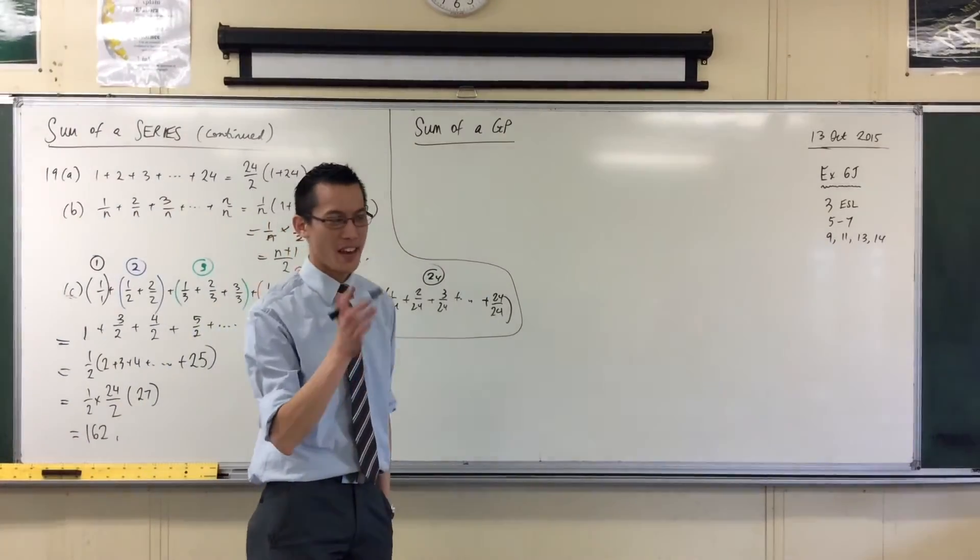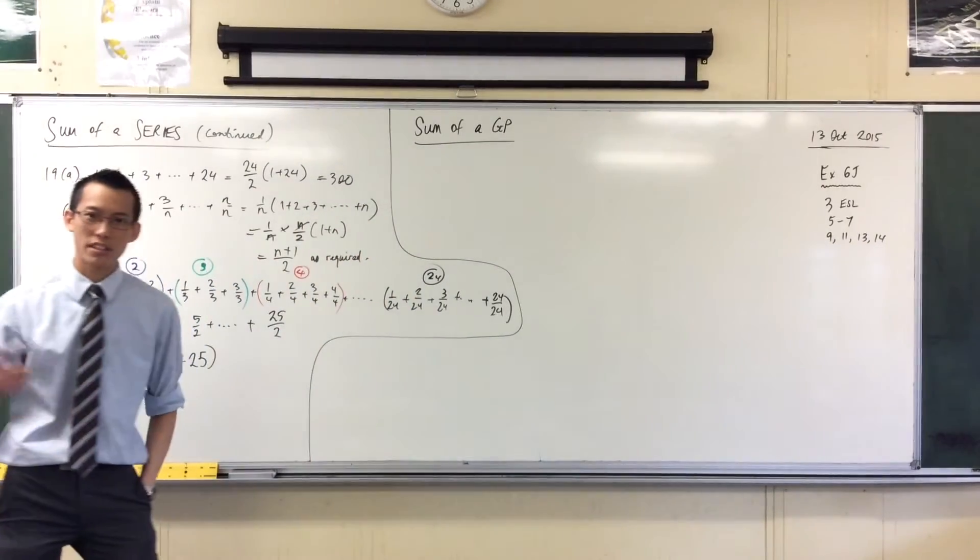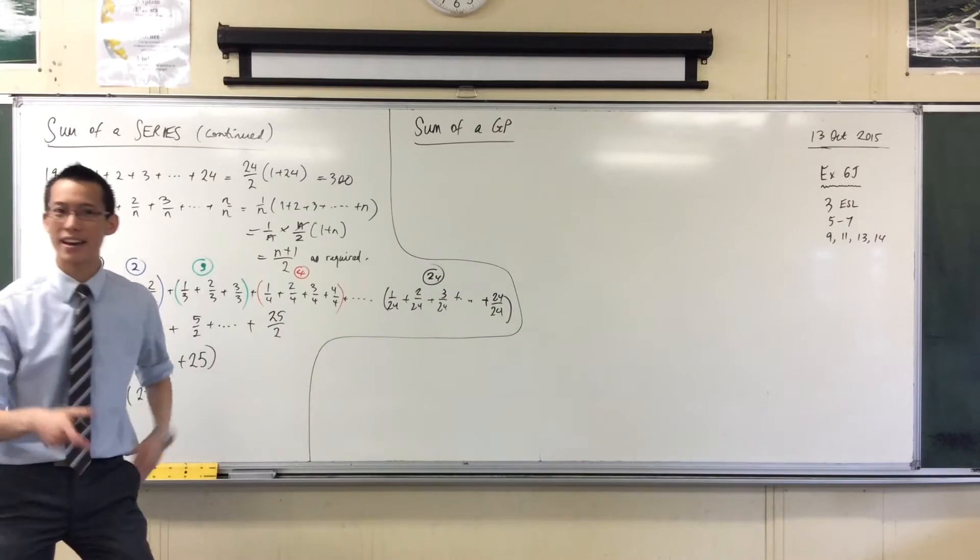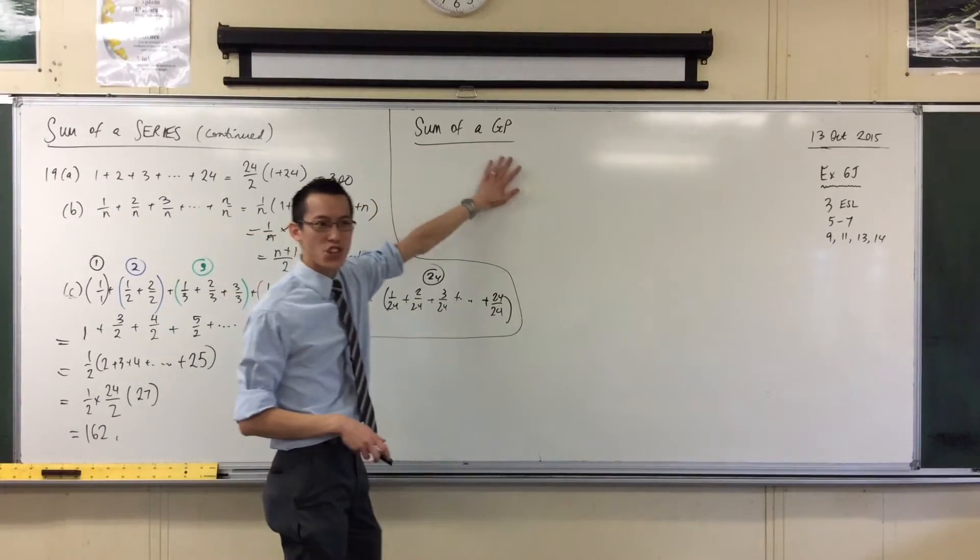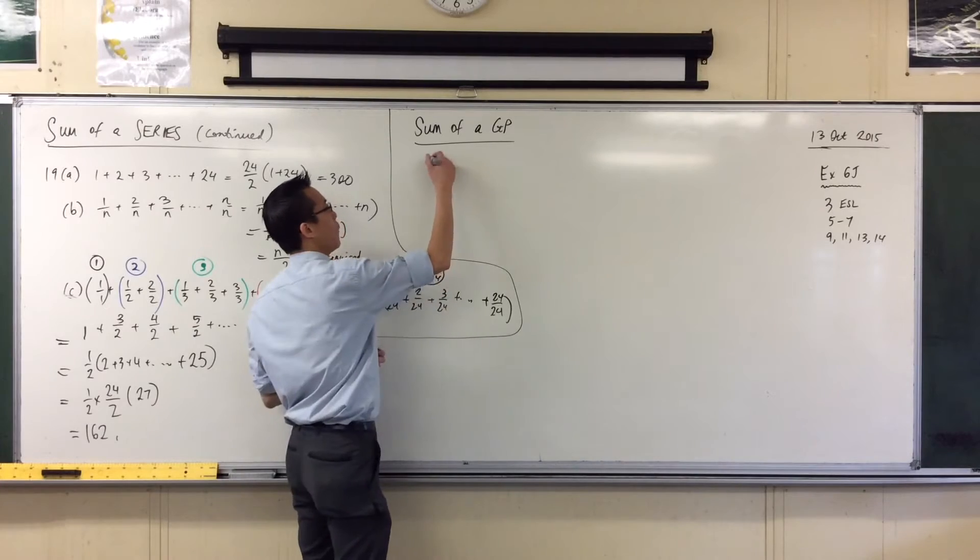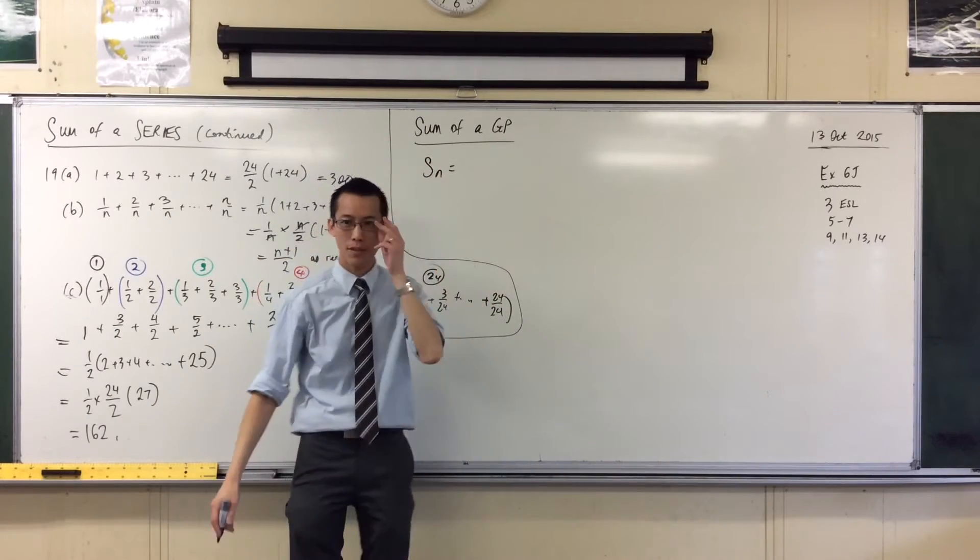Do you remember how we started with APs? The sum of an AP, right? We looked at these partial sums. We're going to start in exactly the same way. If I'm in GP world, in common ratio world, right?